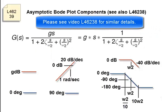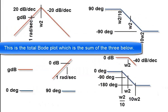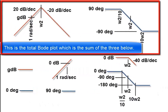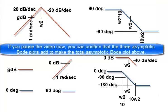Please see the video L46238 for similar details. This is the total Bode plot, which is the sum of the three below. If you pause the video now, you can confirm that the three asymptotic Bode plots add to make the total asymptotic Bode plot shown above.